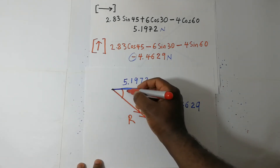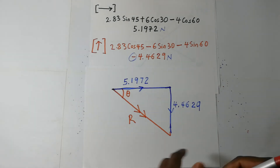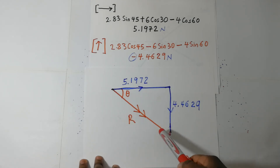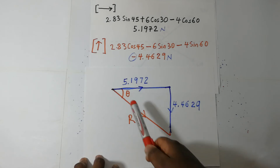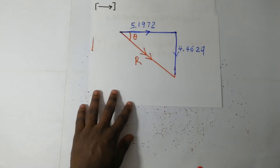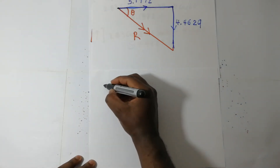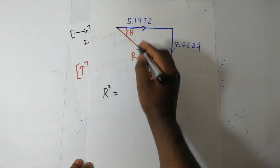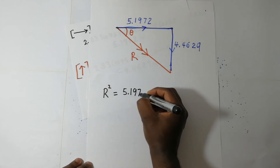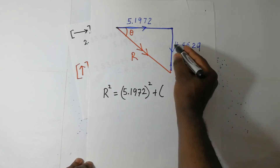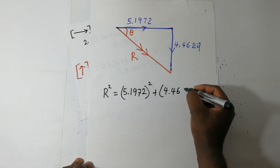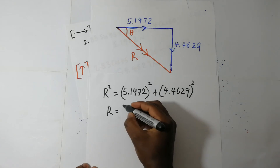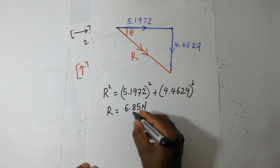After finding the resultant force, we need to find the direction of the resultant force by finding that angle theta. We're going to find the resultant force using Pythagoras theorem, and afterwards we shall find the direction using trigonometry. So to find the resultant force, R squared using Pythagoras theorem is going to give us 5.1972 squared plus 4.4629 squared. From here, we shall end up with our resultant force as 6.85 Newtons.